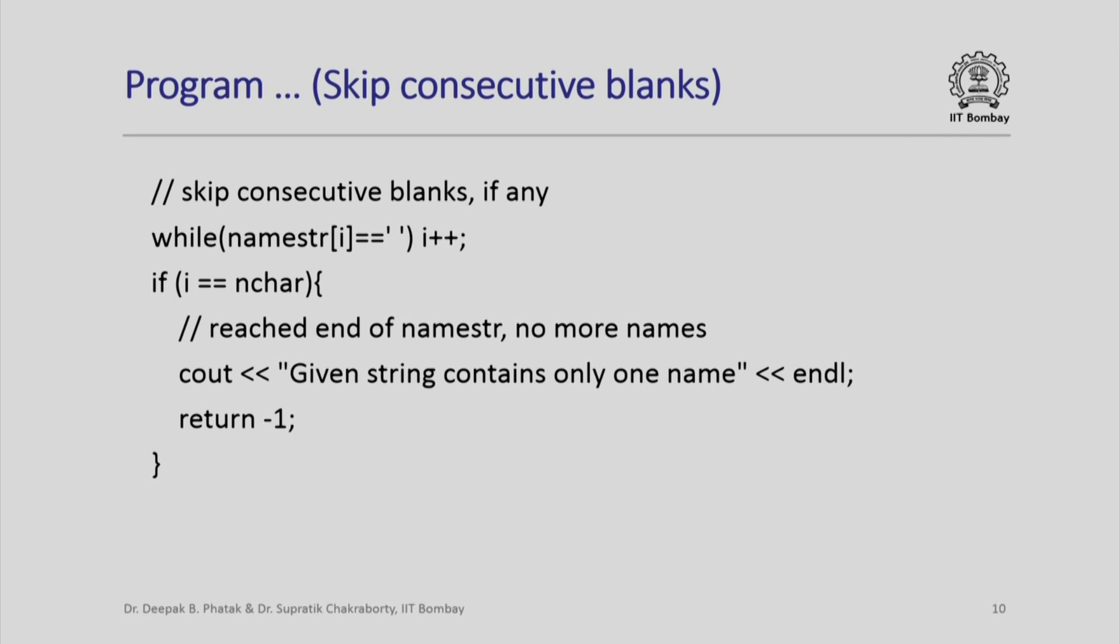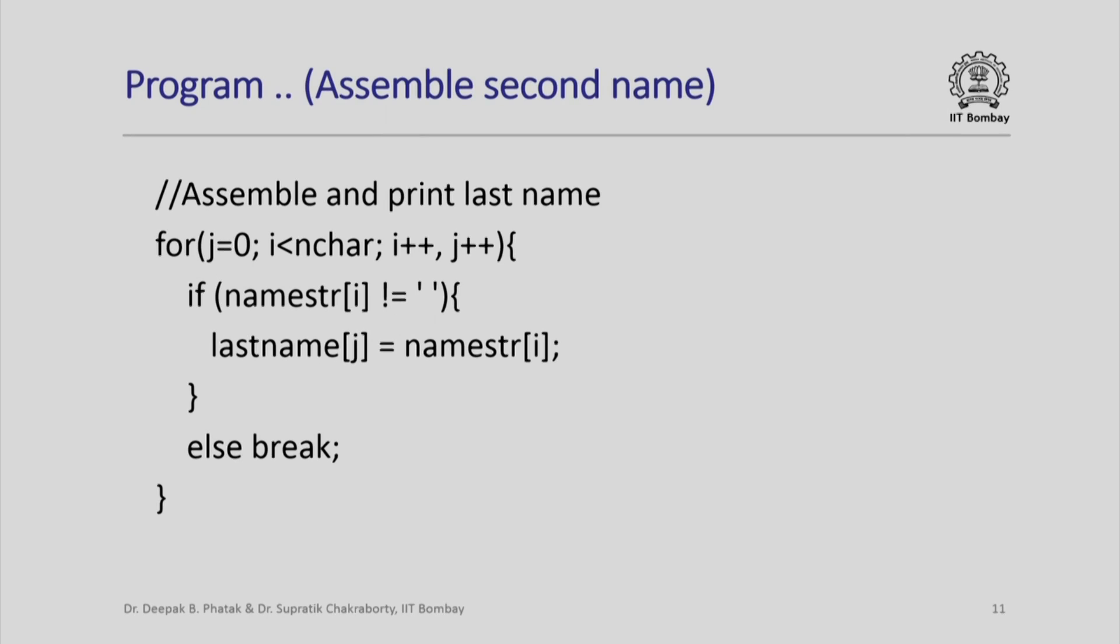On the other hand, if I have two parts, first name and last name as expected, then the last iteration would have taken care of consecutive blanks. I can now assemble and print the last name. This is done exactly in the same way in which the first name was assembled, except that I look for namestring i not equal to blank and insert all non-blank characters into lastname jth position.